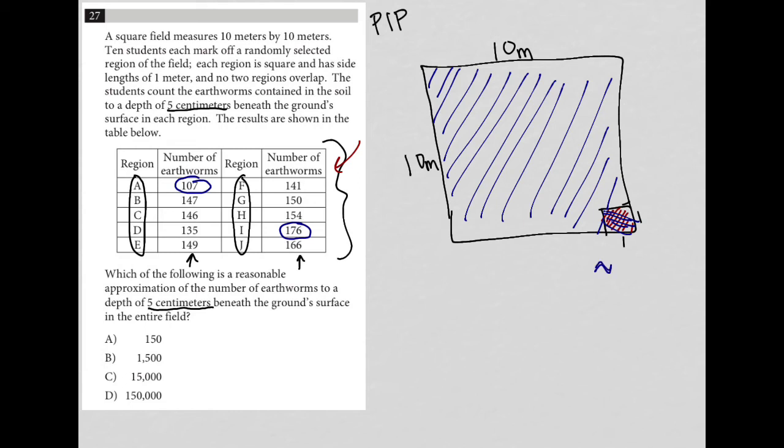I'm going to say there's about, I'll just choose a number in between there, 135. And in fact, let's look at the answer choices. Looks like 150 is a good number. There's about 150 earthworms in each of these little squares on average. We know that each square has a different number, but on average, there are about 150 earthworms per one by one area square.